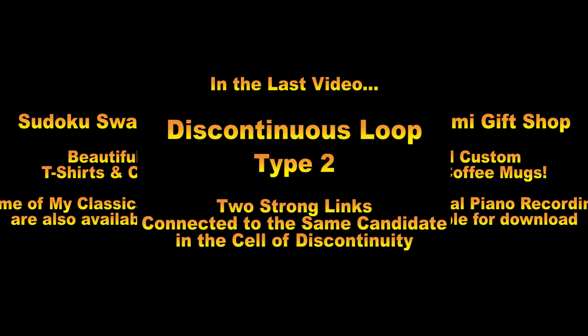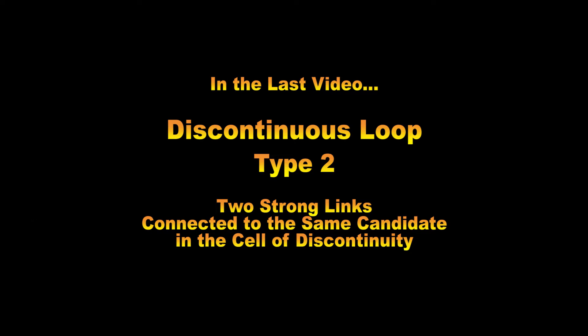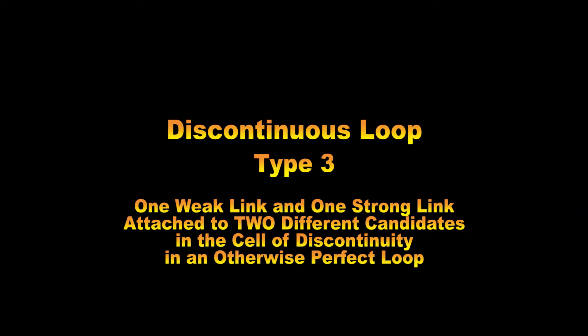Here we go. In the last video, we took a closer look at a discontinuous loop type 2 that has two strong links connected to the same candidate in the cell of discontinuity. Today, we are going to focus on a DL type 3. As you may recall from tutorial number 41, a discontinuous loop type 3 is going to have one weak link and one strong link attached to two different candidates in the cell of discontinuity in an otherwise perfect loop. We are going to prove that the weakly linked candidate will turn out to be false and can therefore be eliminated.